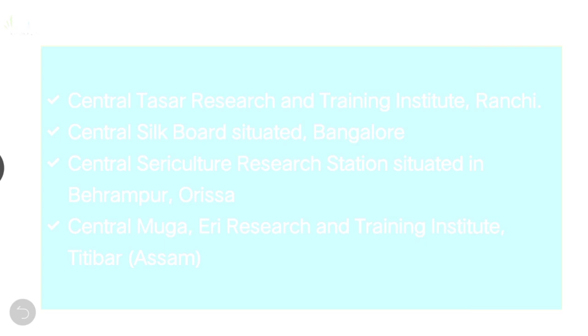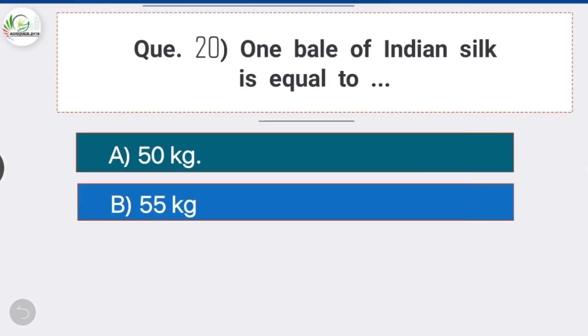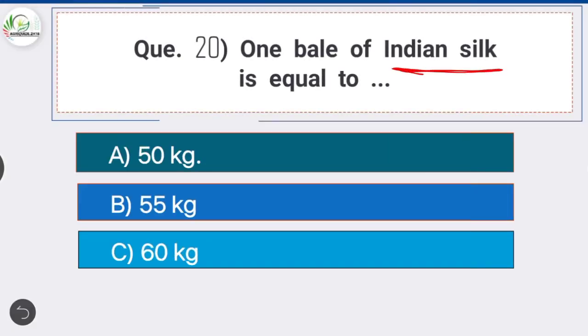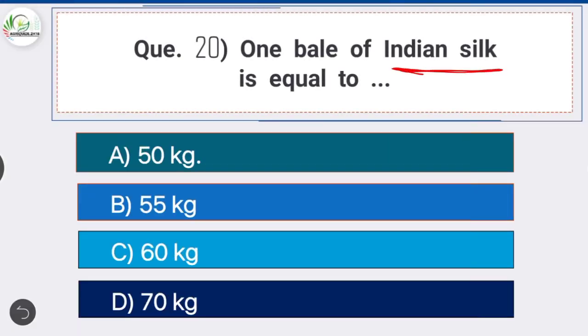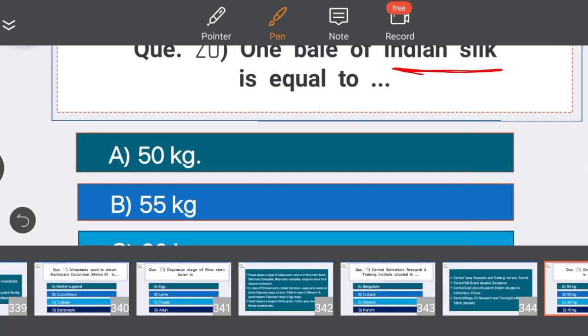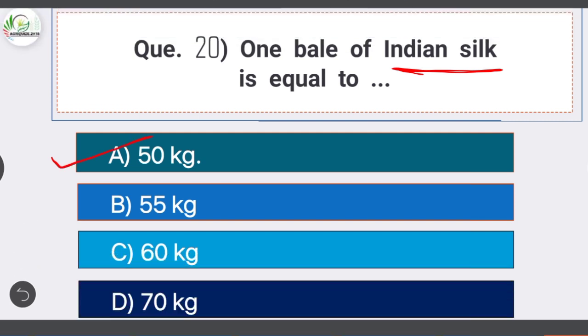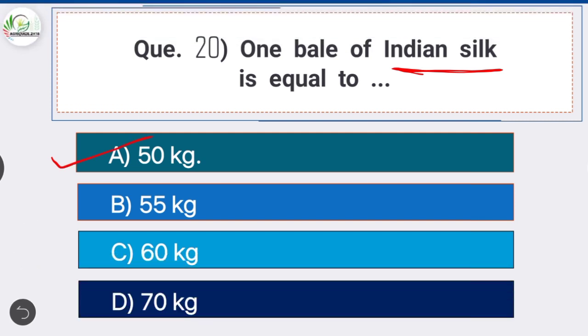Question 20: One bale of Indian silk is equal to Option A, the correct answer: 50 kg. One bale of Indian silk is equal to 50 kg.